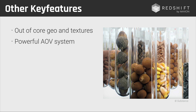Redshift also comes with a powerful AOV system — Arbitrary Output Variables, which you might know from Cinema 4D as multipasses. You can split your rendering into the diffuse component, reflection, refraction, direct illumination, and global illumination. You can create a depth channel or motion vector, all supporting the 32-bit OpenEXR workflow. Redshift also supports instancing — both Cinema 4D instances and its own instancing system where instances are created on the GPU, saving memory. You can also render particles using Redshift, including changes in colorization over time.